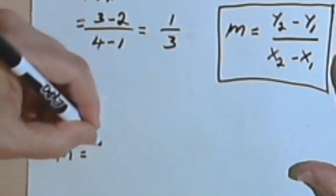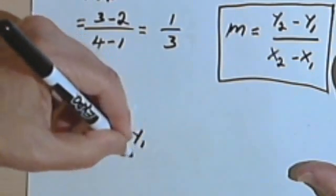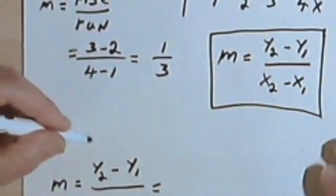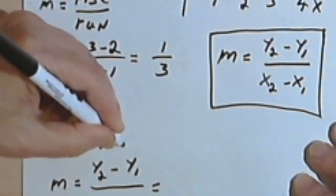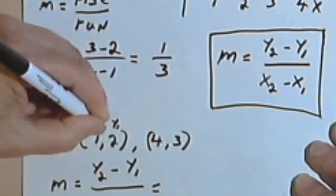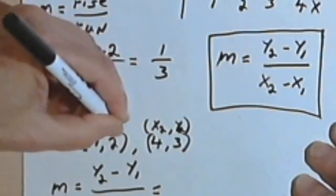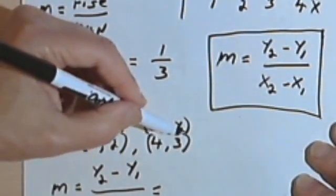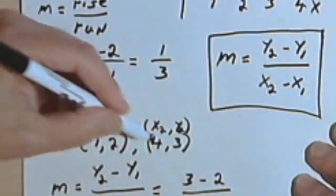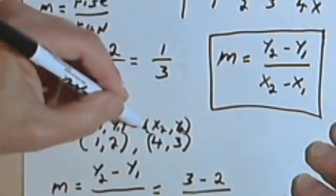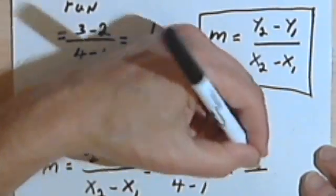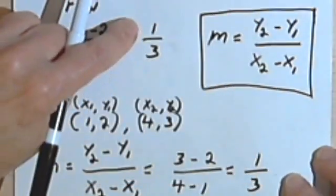Here's my formula. Slope equals y sub 2 minus y sub 1 over x sub 2 minus x sub 1. My ordered pair was 1, 2 and 4, 3 and I can write in x sub 1, y sub 1, x sub 2, y sub 2. And I'm just going to plug these things in. So y sub 2 was 3, y sub 1 is 2, and then I've got x sub 2, which is 4, and x sub 1, which is 1. And if I do my subtraction, I'll get 3 minus 2 is 1, and 4 minus 1 is 3, and that's the same answer I got before.